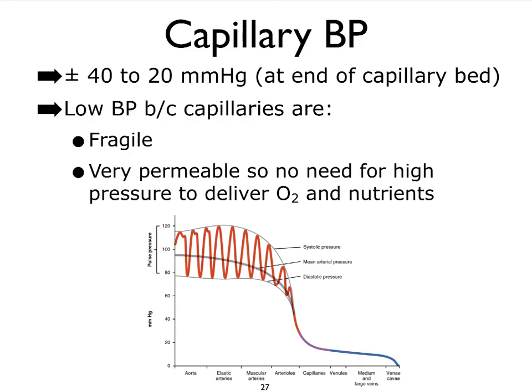Capillary blood pressure is illustrated in the purple region of the graph. It remains higher than venous blood pressure to maintain the pressure gradient returning blood to the heart, but it is relatively low. In the systemic capillaries, pressure ranges from about 40 to 20 mmHg depending on which end of the capillary bed we are at. This matters because capillary walls are fragile and highly permeable — we don't need high-pressure blood to maintain gas exchange and nutrient and waste exchange.